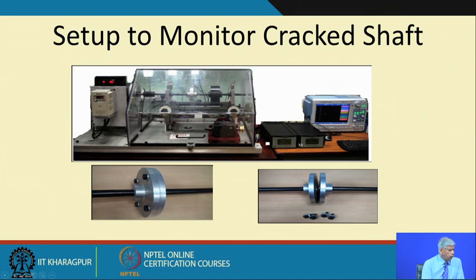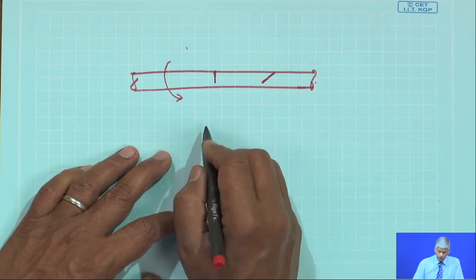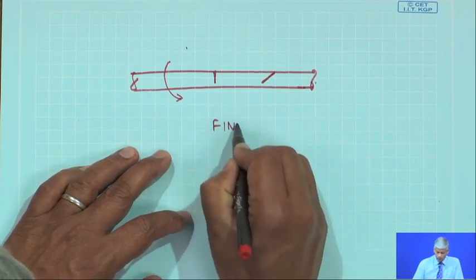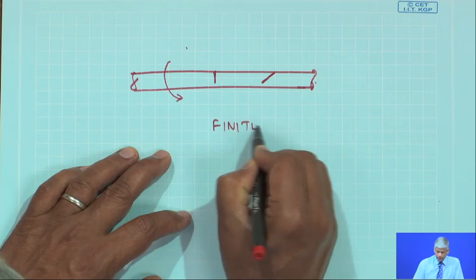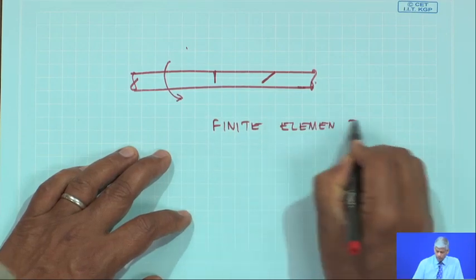These two units are signal conditioners being used for the accelerometer, and the signals were eventually picked up in a data logger where they can store the data. Today a lot of numerical techniques also exist, what is known as the finite element method.